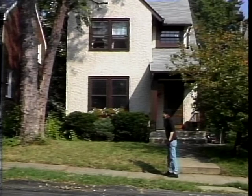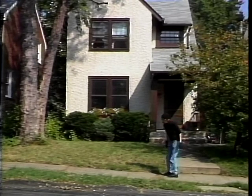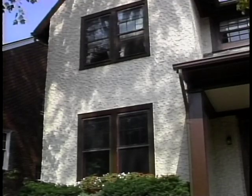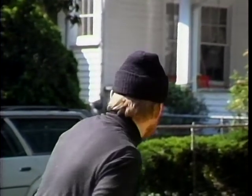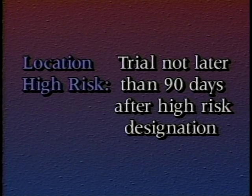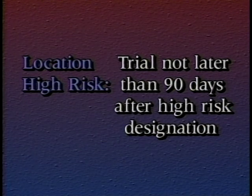A fourth location interval is location high risk. A defendant who is released while awaiting trial can be designated a high-risk individual by the U.S. attorney. Location high risk covers the time period during which a defendant is both released and designated high risk, beginning on the date the defendant is designated high risk. The Speedy Trial Act establishes a 90-day limit for this interval — trial of any defendant designated high risk must begin not later than 90 days after the designation.